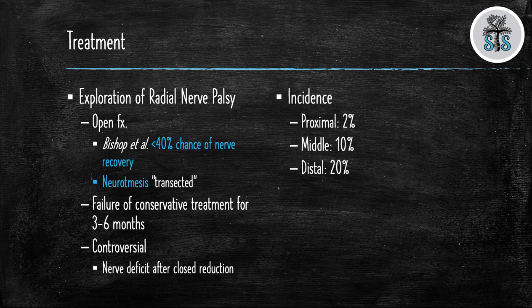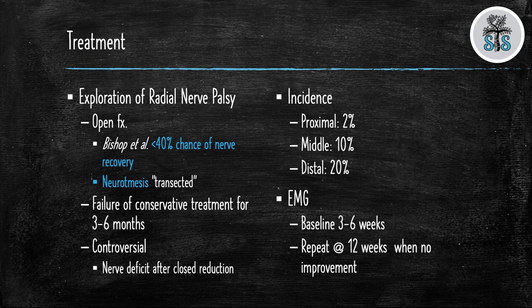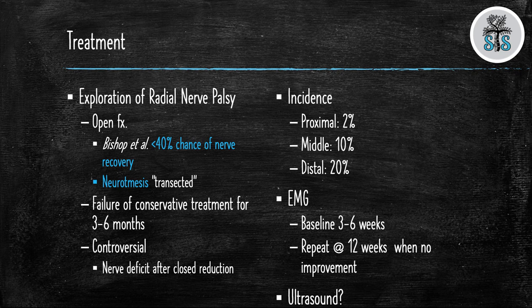The incidence of radial nerve injury increases the more distal the fracture site. When treating radial nerve palsies conservatively you should perform a baseline EMG at three to six weeks from the time of injury. If the radial nerve is still out you can repeat the EMG at 12 weeks. Some physicians will elect to perform an ultrasound to see if the radial nerve is intact or transected.